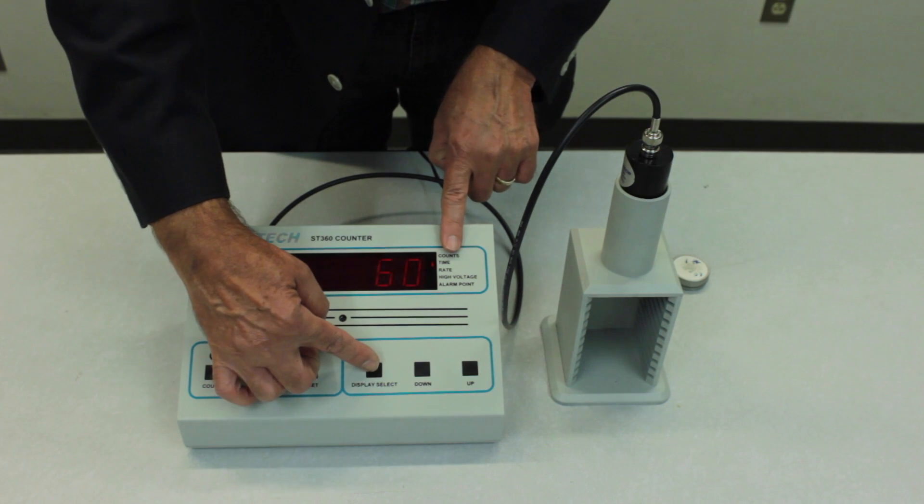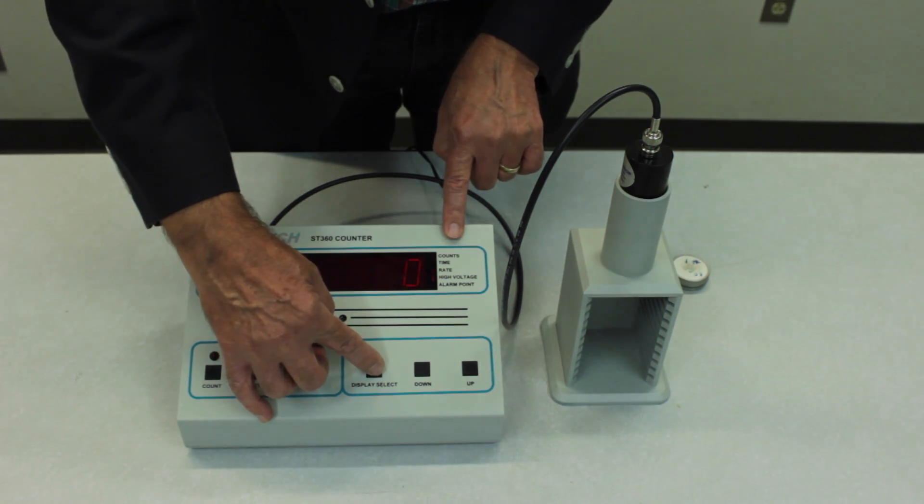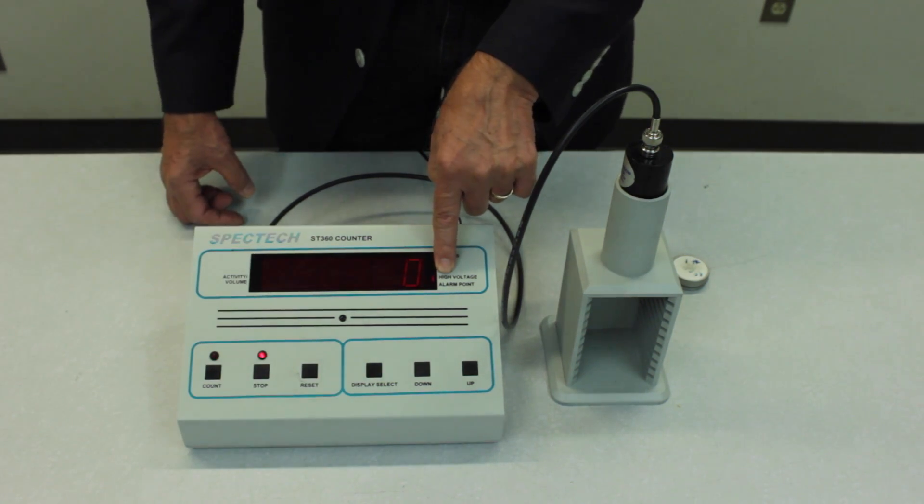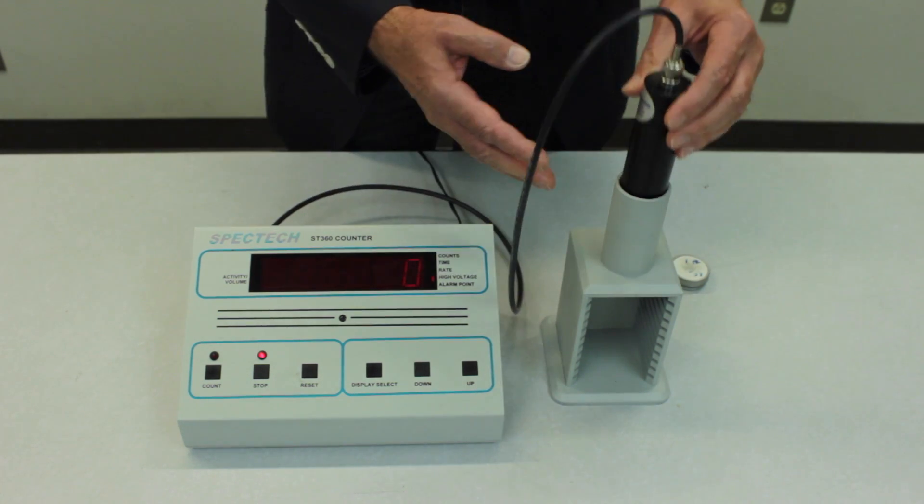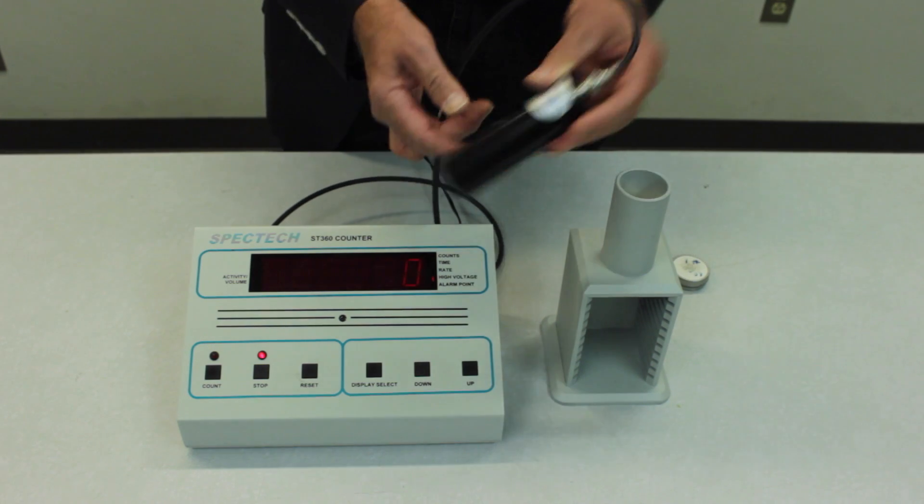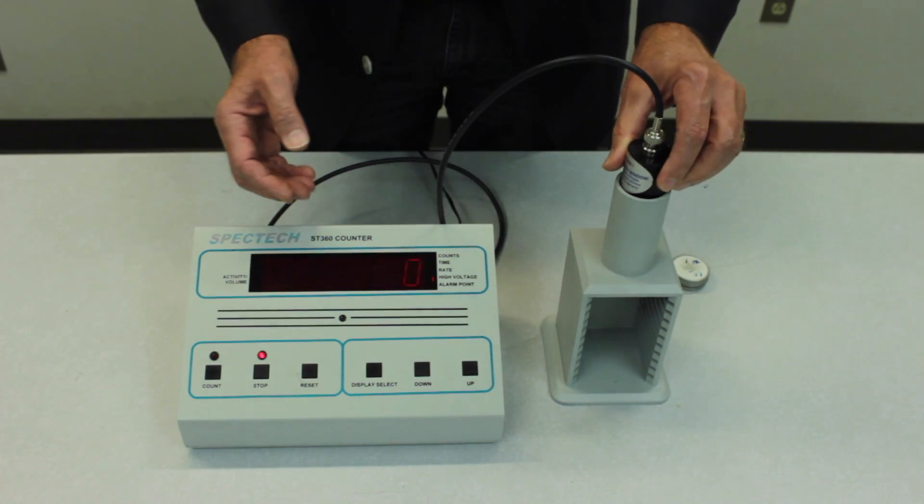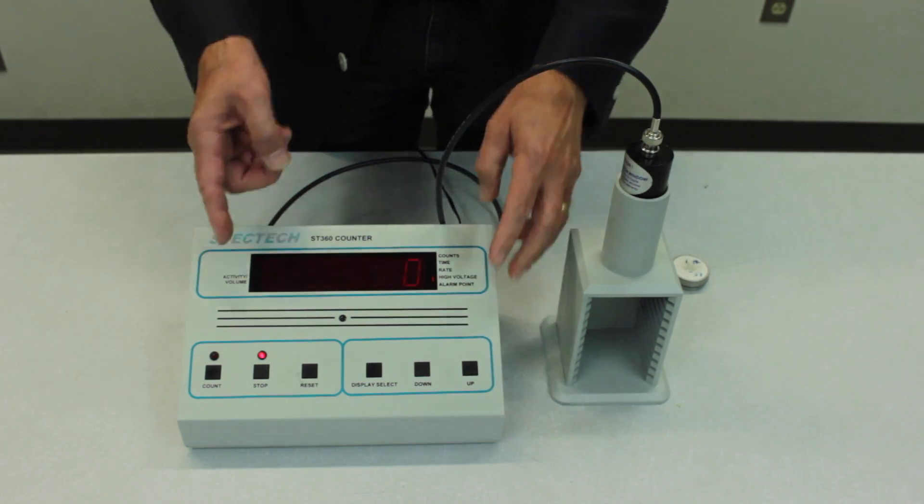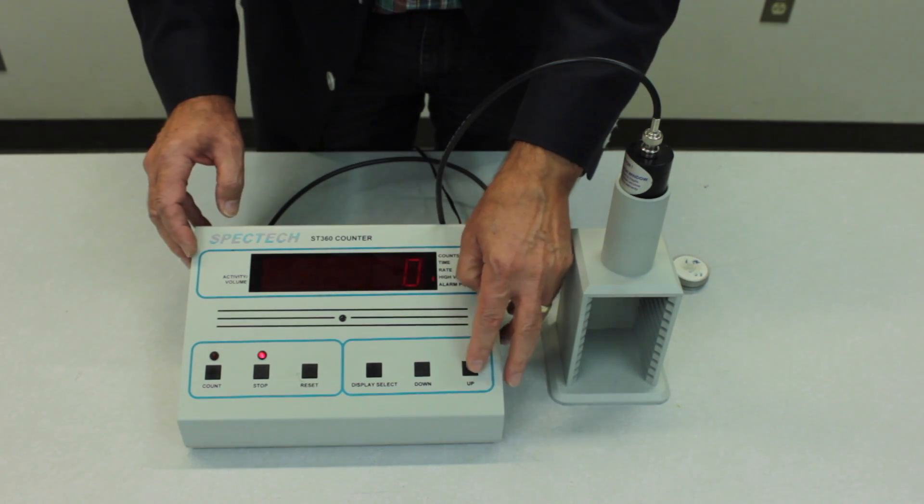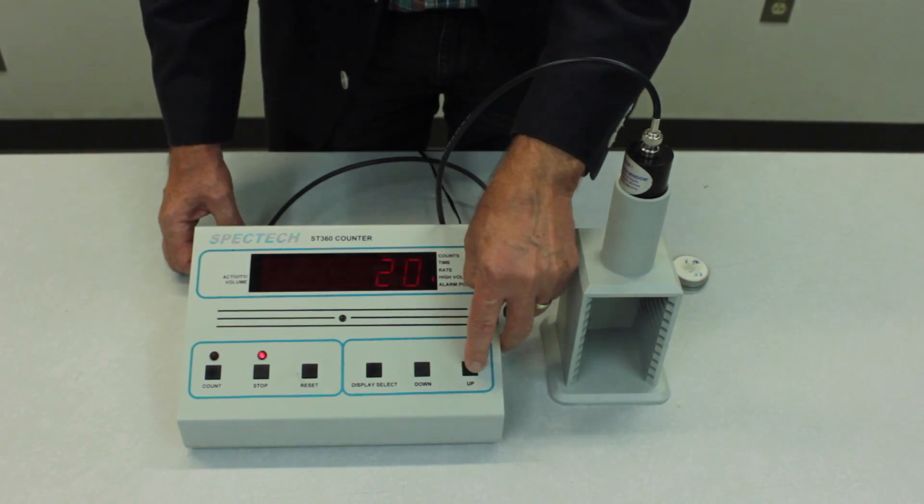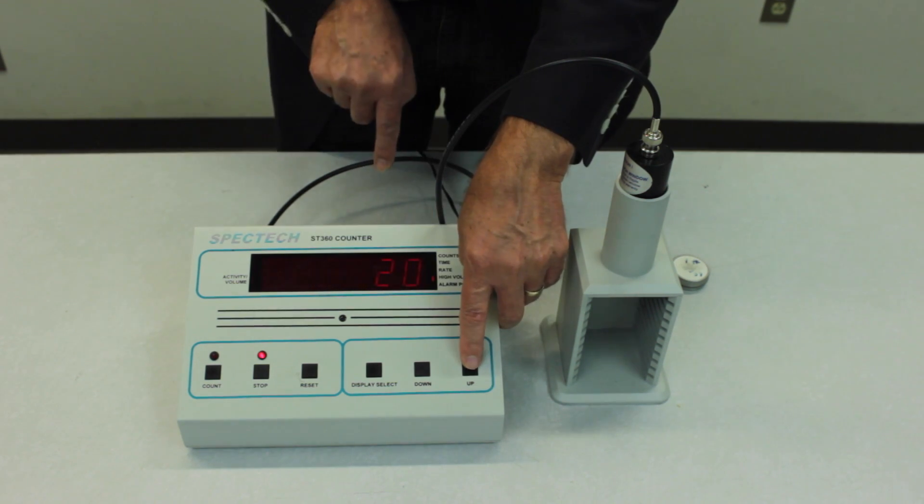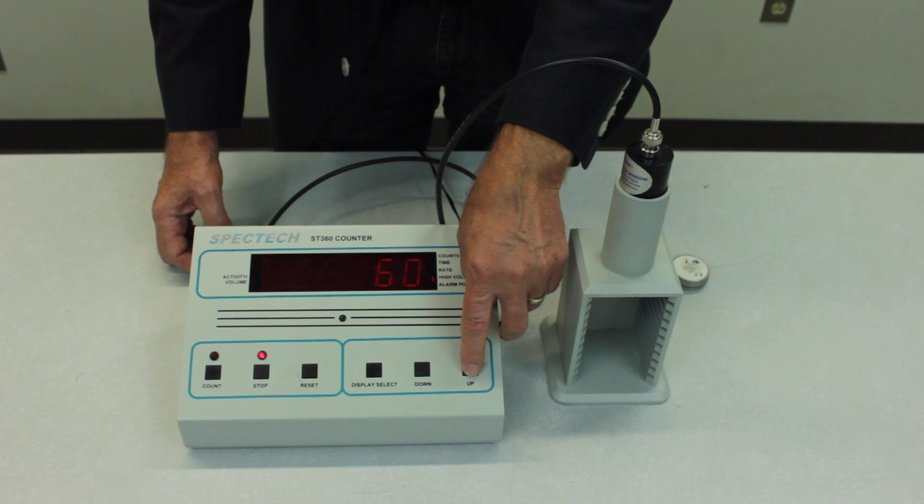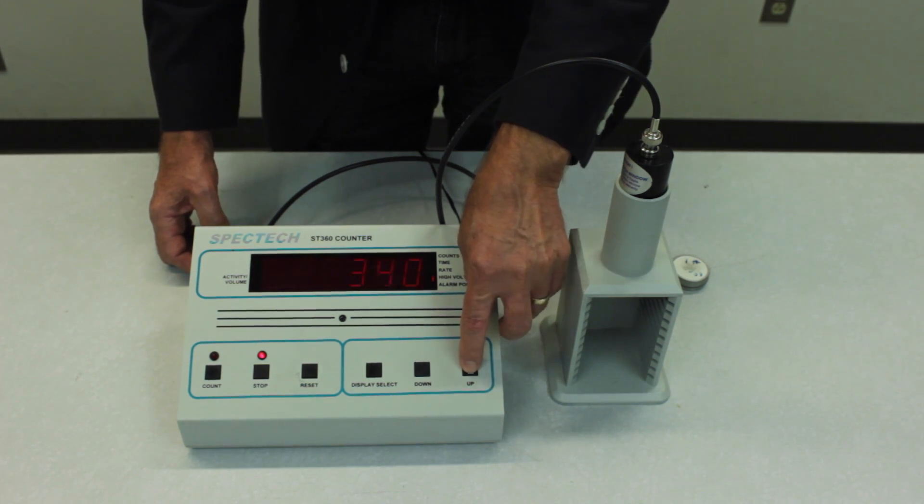Then we press the display select button again and turn on the high voltage. So I happen to know that the operating voltage for this particular tube is something in the neighborhood of eight hundred volts. So I'm going to start there just to illustrate how the instrument works. So pressing the up button changes the voltage in increments of twenty volts. I'll just turn this up to eight hundred.